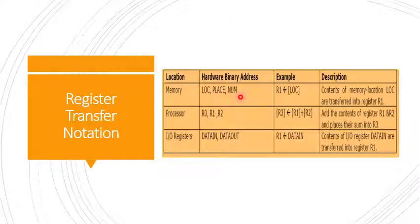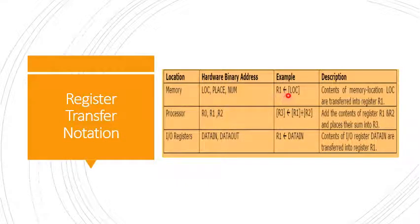For example, the name of a memory location can be LOC, PLACE, or a number or variable A. The name of a register can be R0, R1, or R5. The content of a location is denoted by placing square brackets around the name. For example, R1 ← [LOC] means the content of memory location LOC is transferred to processor register R1.